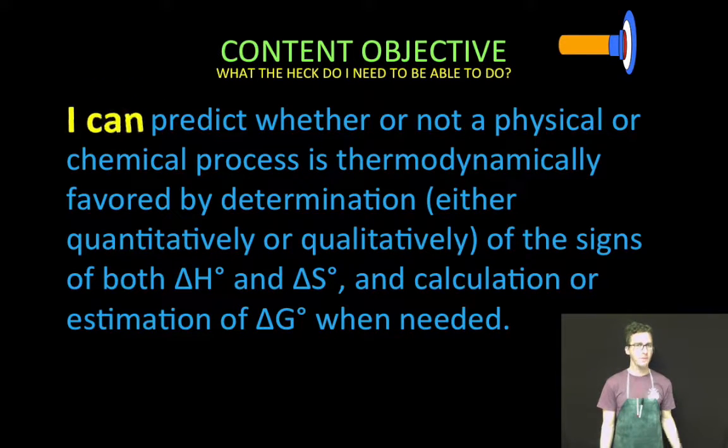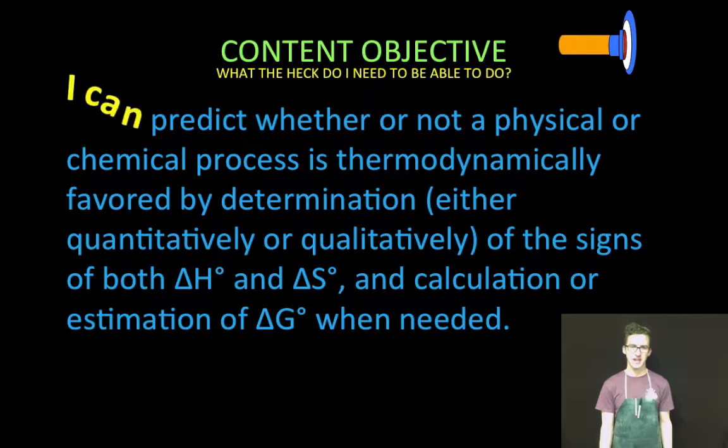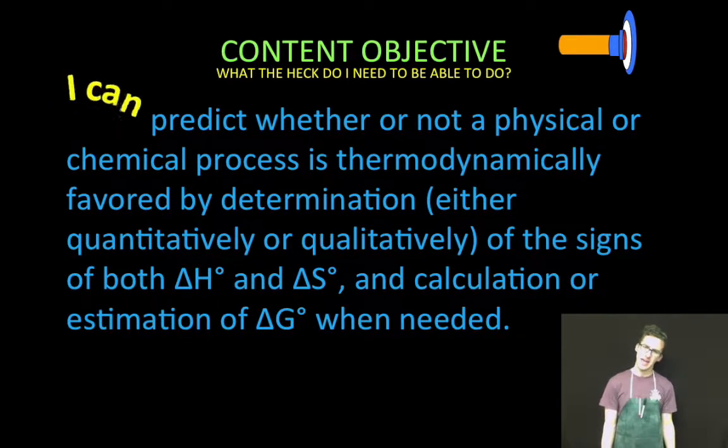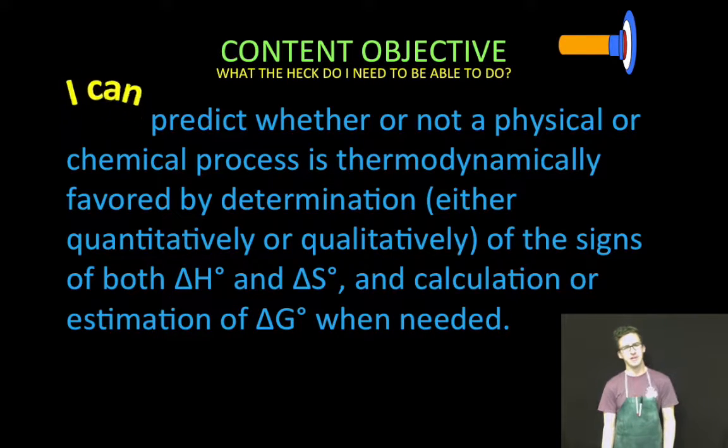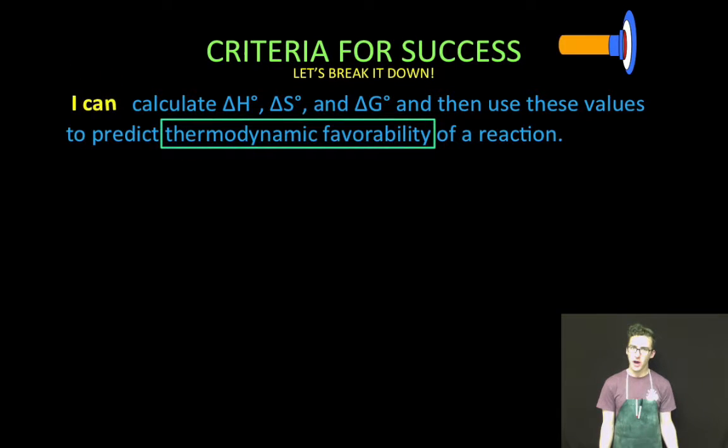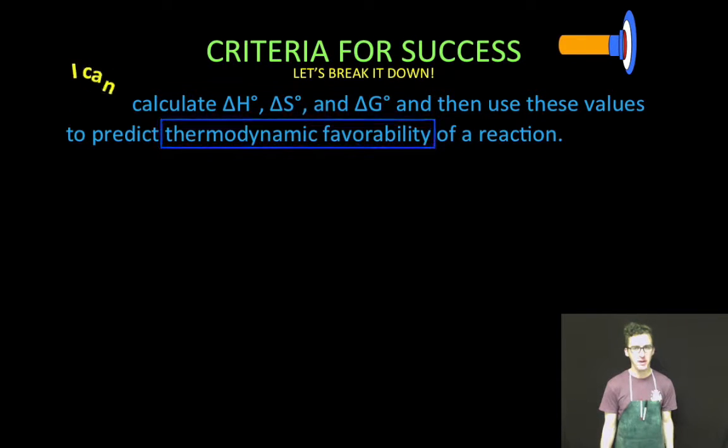Ultimate goal here: predict whether or not a physical or chemical process is thermodynamically favored by determination, either quantitatively or qualitatively, of the signs of both delta H and delta S and calculation or estimation of delta G when needed. A lot there, but now that we talked a little bit about some of these variables individually, we're gonna put them together to predict the thermodynamic favorability of a reaction.